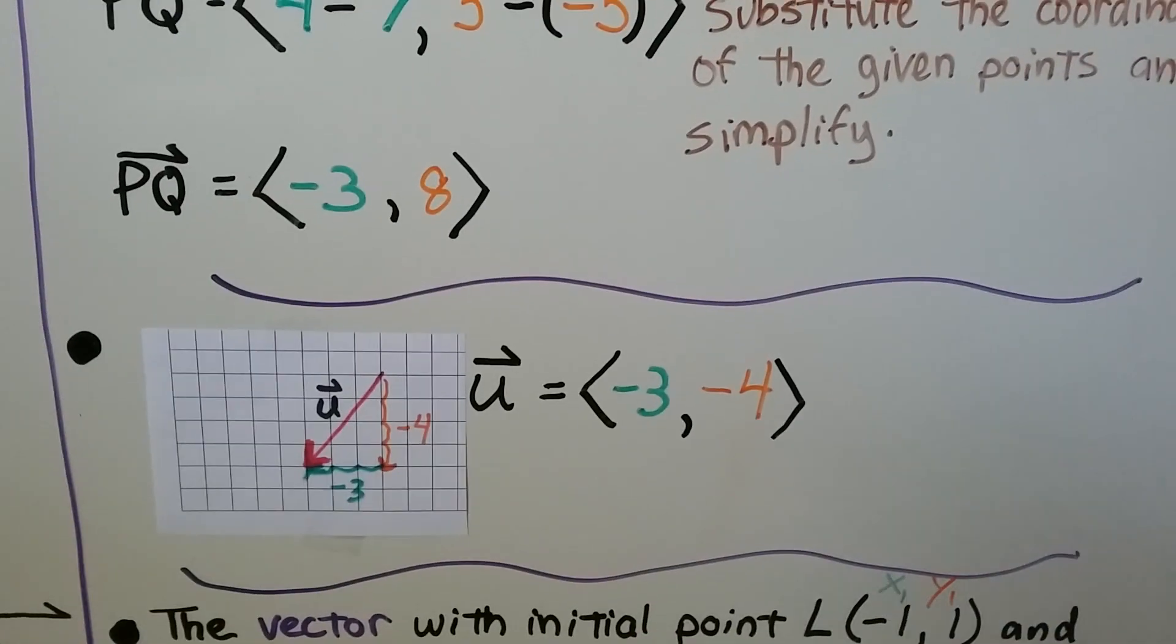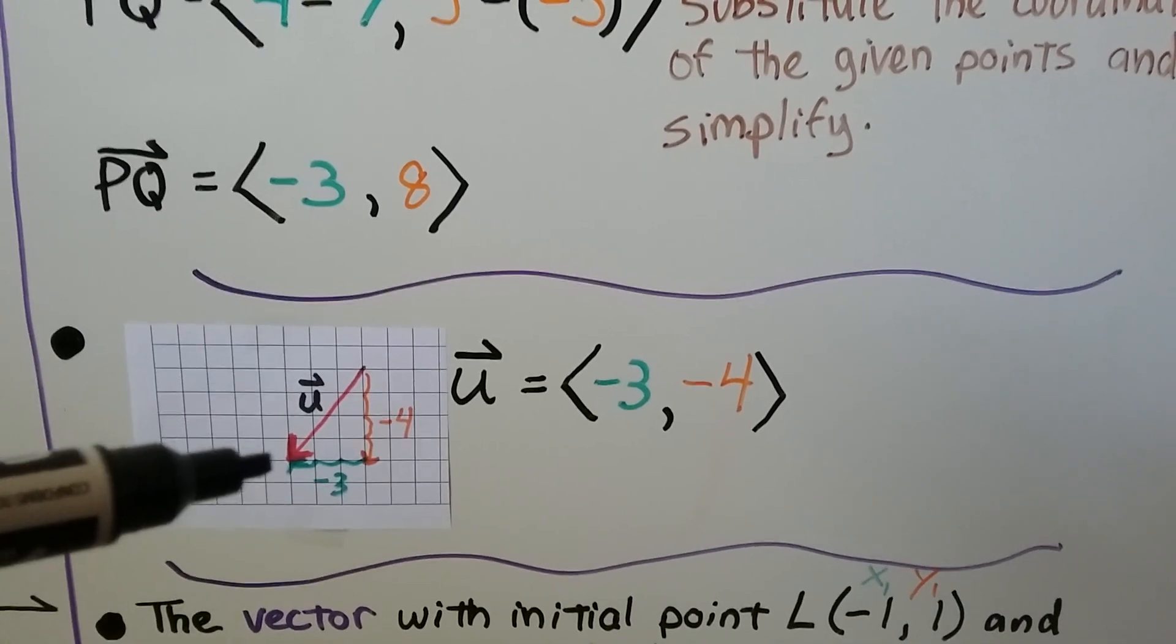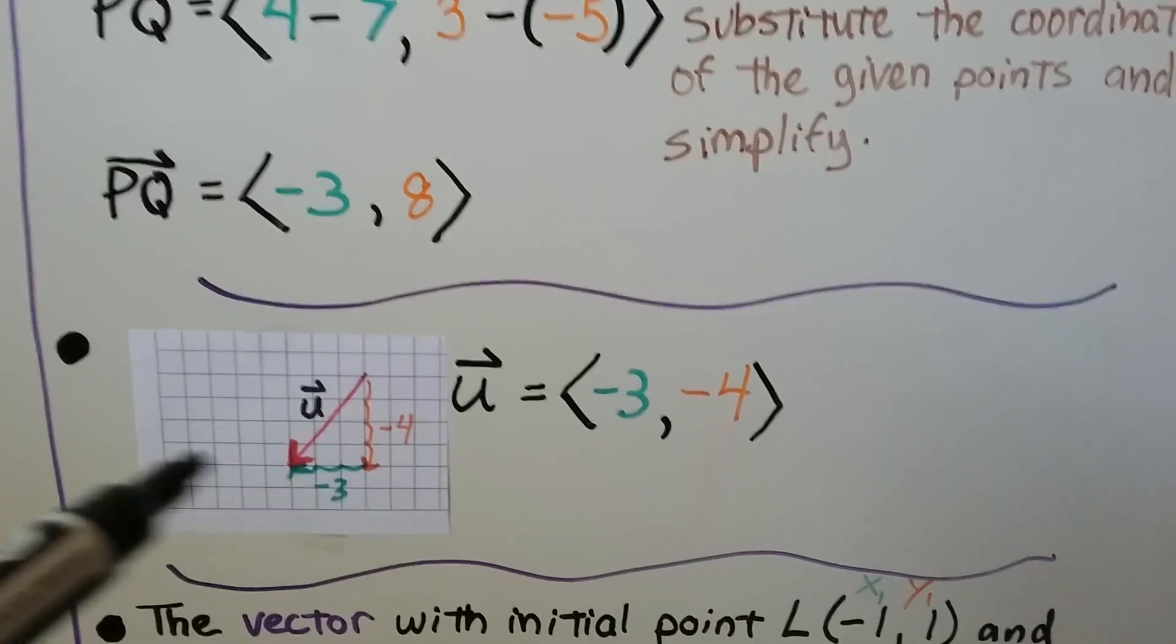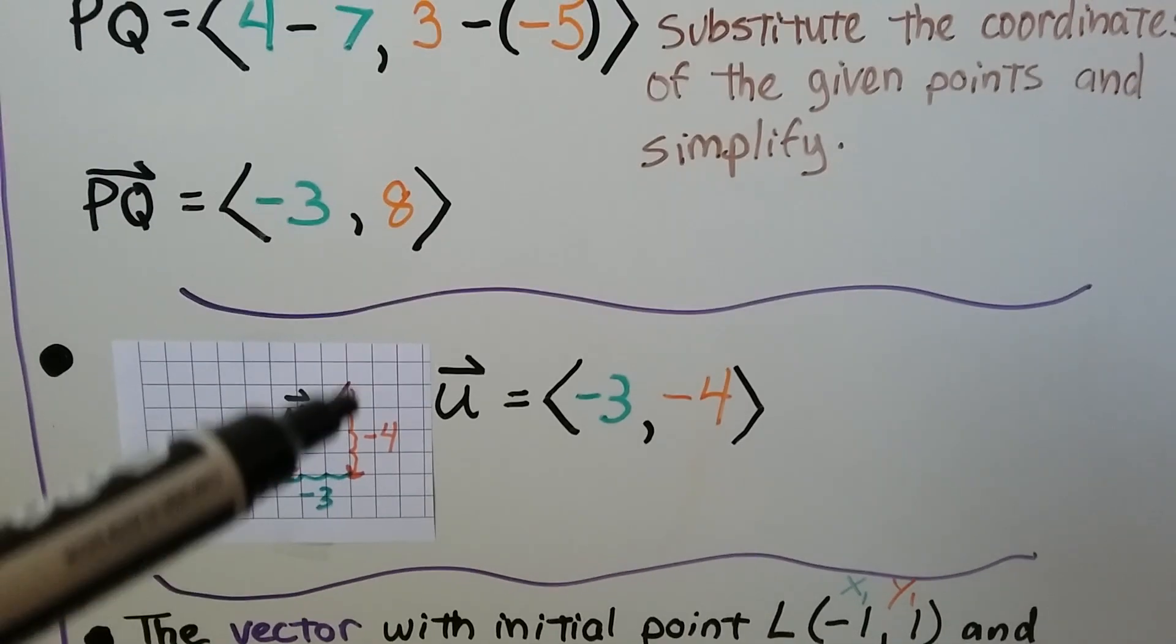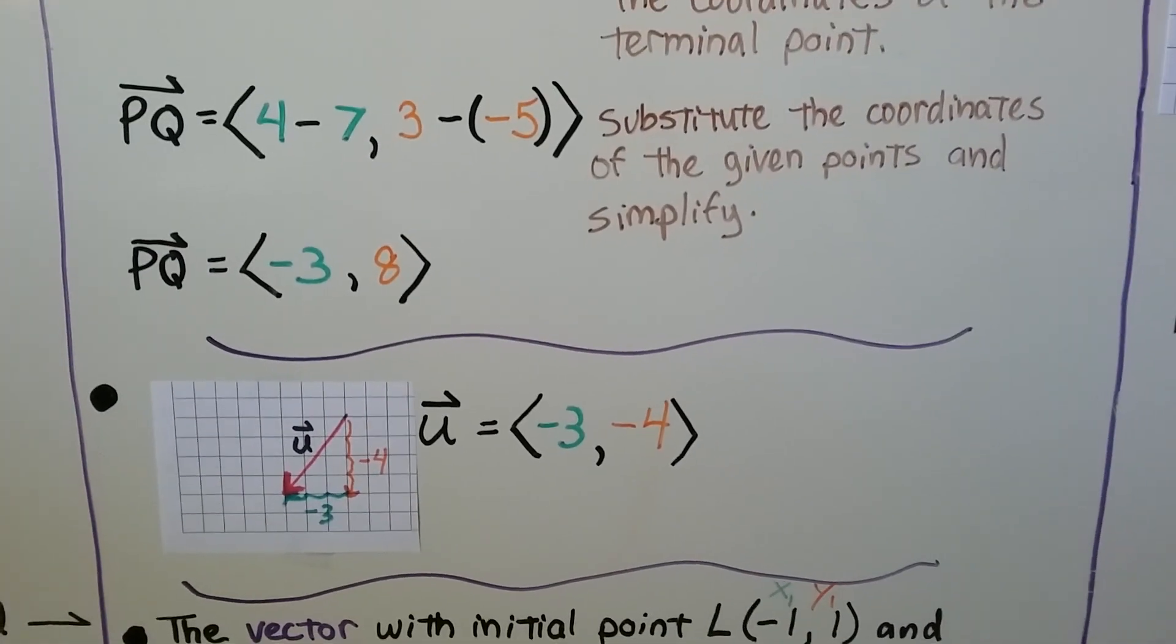And look at this one. This is vector U. It's going down in this direction towards the left. Our horizontal change is a negative 3. If this was the x-axis, it would be going into the negatives. And it's coming down negative 4. So vector U is negative 3, negative 4.